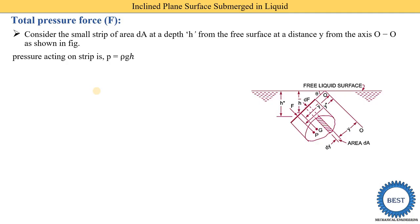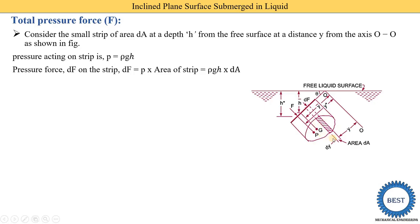The pressure force dF on the strip equals pressure times the area of the strip: dF = ρgH · dA. The strip is of rectangular shape and its area is denoted dA. To find the total pressure force on the whole area, instead of summing many strips, we perform integration, which is the summation of the number of strips. So F = ∫dF = ∫ρgH · dA.